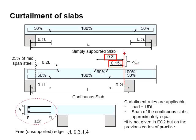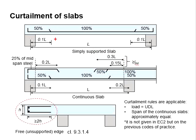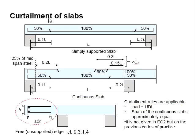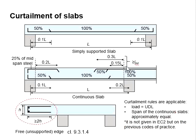It is important to ensure that this length is greater than the minimum required anchorage length. These curtailment rules are applicable for UDL loading and for continuous slabs with approximately equal spans. These curtailment rules are not given in Eurocode but are given by the previous code of practice.